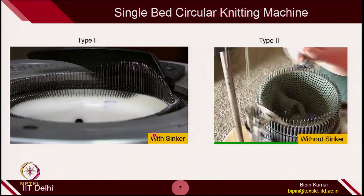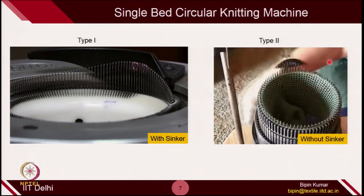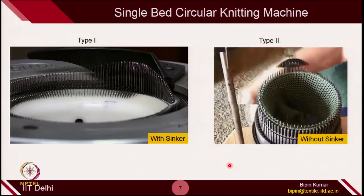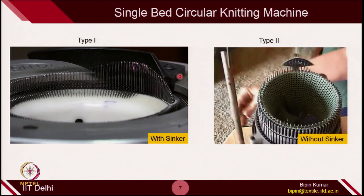Two elements simultaneously play an important role in loop formation with sinker machines. Without sinker, only the needle is sufficient to make the loops. But with sinker, you need both needle and sinker working in a proper fashion. In the without-sinker machine you can see only the needle going up and down. Most machines in circular knitting are sinker-based, so in this particular lecture I am going to prioritize mostly on the type of machines where a sinker is attached on the circular knitting machine.